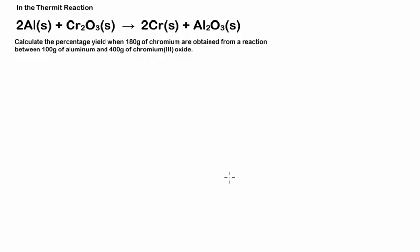Alright guys, so I have a question here which is to do with calculating percentage yields, and I'm just going to work through it and explain my reasoning as I go along. So this question says: in the thermite reaction, 2Al plus Cr₂O₃ produces 2Cr plus Al₂O₃. So basically, we're getting chromium.